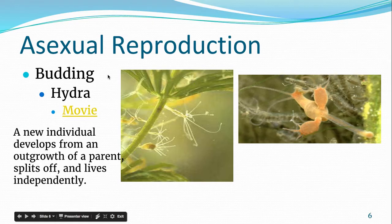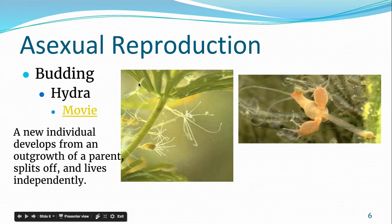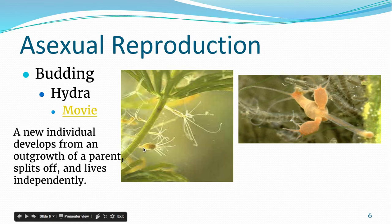Budding is another type of asexual reproduction. Instead of the organism splitting in half like the bacteria did, a new individual develops from a little tiny outgrowth. Hydra are an example — an organism that lives underwater. These little buds will develop and then break off and grow into a full-size organism that lives independently. But again, because this is asexual, this little organism will be the exact same as the parent and they have the exact same DNA.